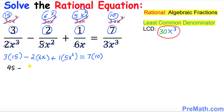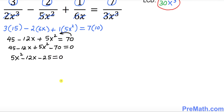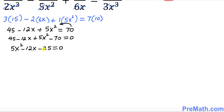Multiplying out: 3 times 15 is 45, minus 2 times 6 is 12x, plus 1 times 5 is 5x squared, equal to 7 times 10 which is 70. Moving 70 to the left side gives 5x squared minus 12x minus 25 equal to 0. This is a quadratic equation.